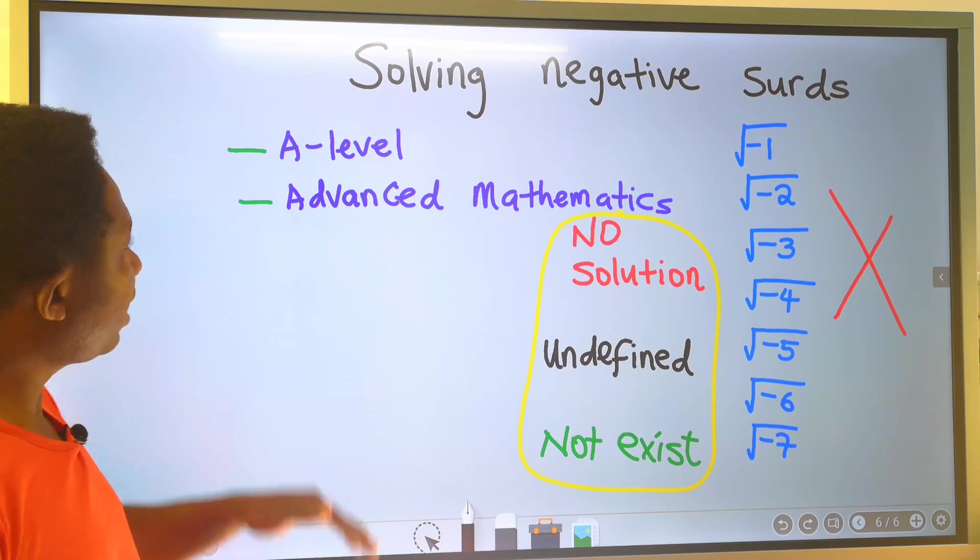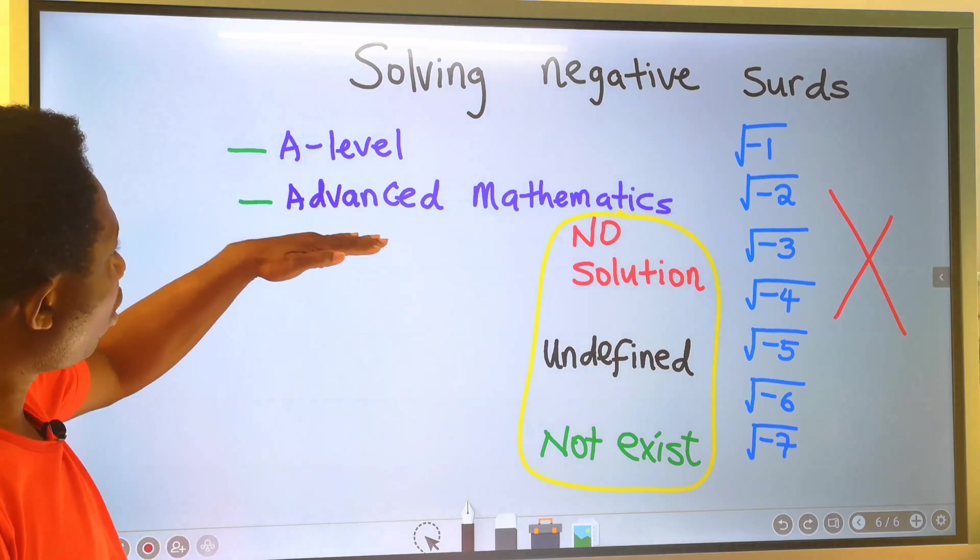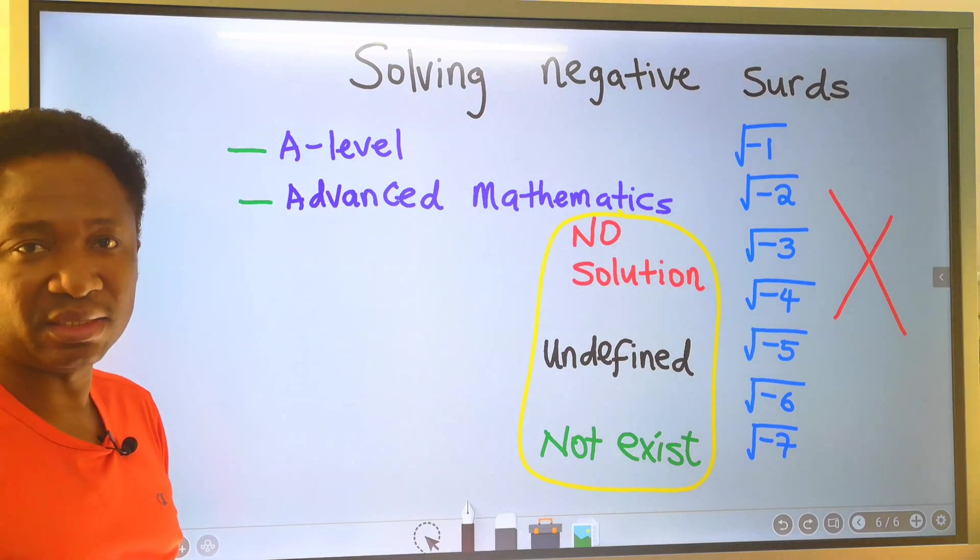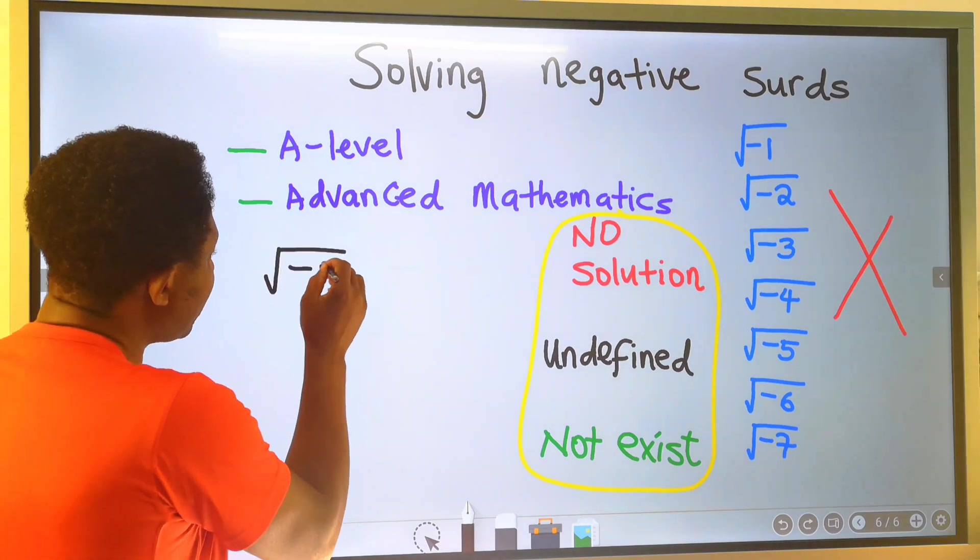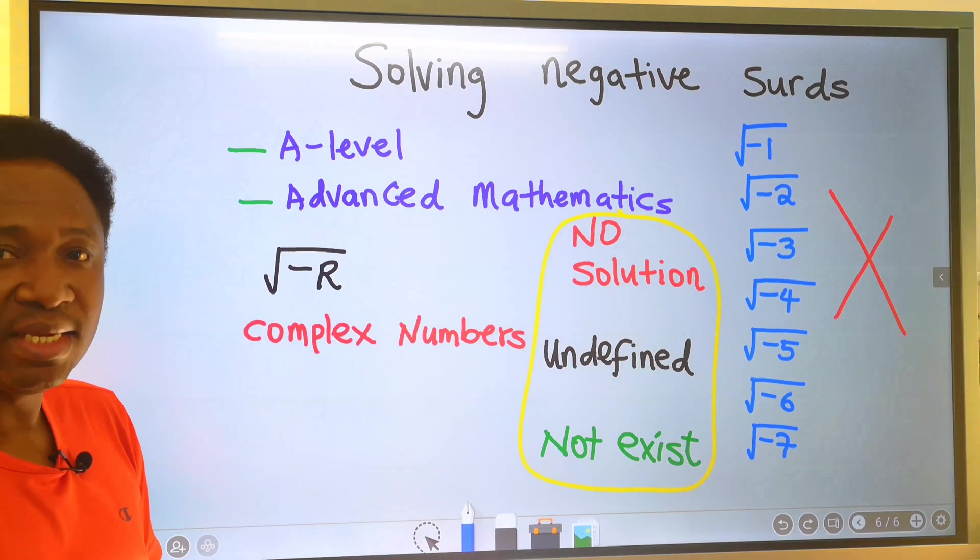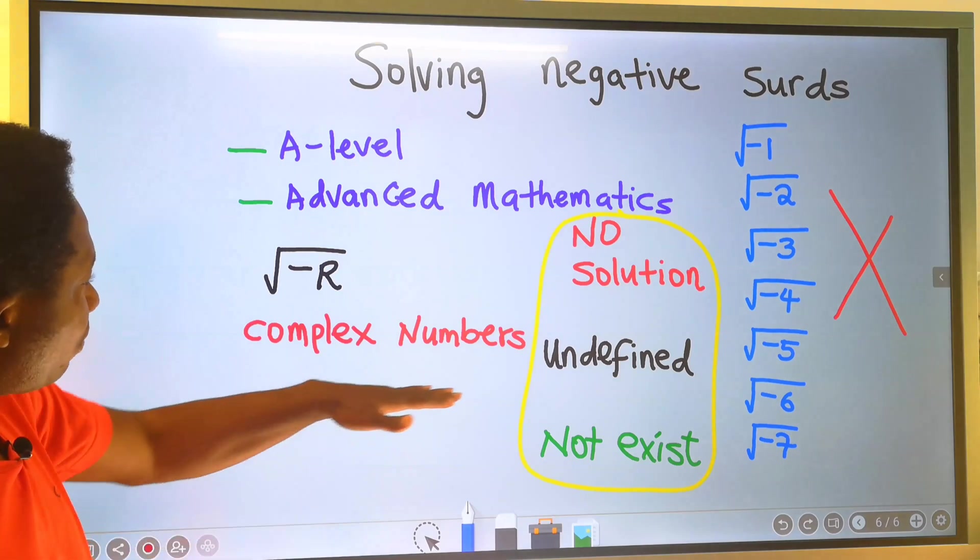However, in A-level or advanced mathematics, the square root of any negative number has been dedicated to complex numbers.